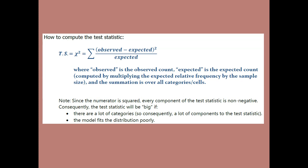The way that you compute a test statistic for a chi-squared test is quite different from anything we did in Chapter 6. For every category, you're going to have two counts: an observed count, which is the value from the sample, and an expected count, which you get based on the null hypothesis and the sample size. You take the relative frequency from the model and multiply by the sample size to get the expected count. Then for each category or cell, you compute (observed minus expected) squared divided by expected. Then you add all of them together, and that's your test statistic. The notation uses a lowercase Greek letter chi — so that's chi-squared — immediately to the right of TS.